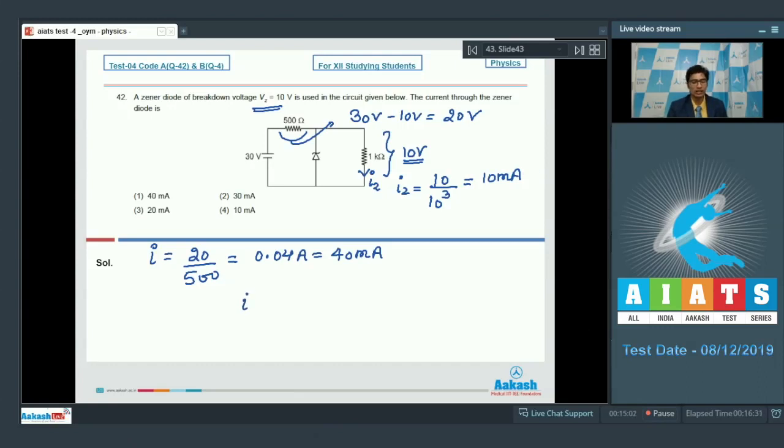The remaining current, which will be equal to I minus I2, that is 40 minus 10, that is 30 milliampere, would flow across this Zener diode, and hence the correct answer for this question is option number 2.